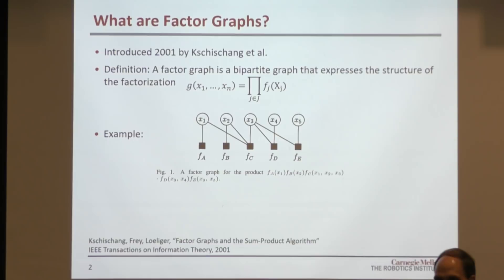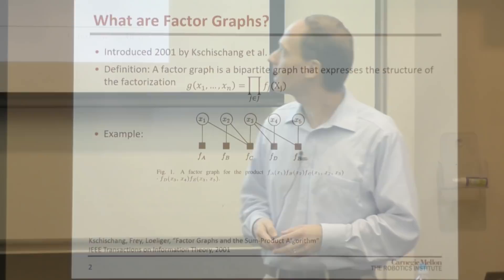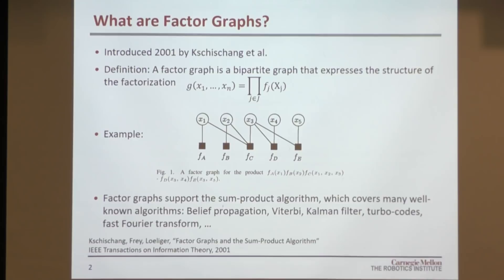With that very general relationship, we can use very general algorithms such as the sum-product algorithm. This is a very powerful algorithm that covers many other things you may be familiar with: belief propagation, Viterbi, Kalman filter, turbo codes, and the fast Fourier transform. So everything can be expressed in that form.